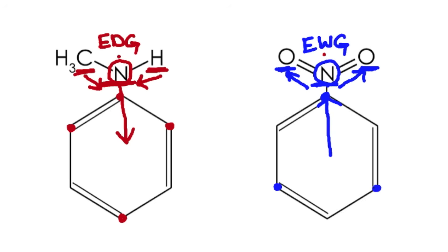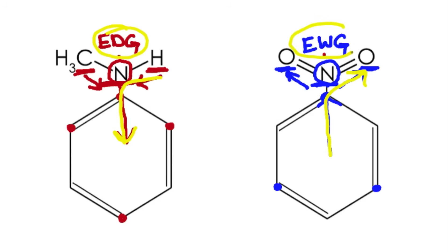So notice, based on electronegativity, if the arrows are pointing into the ring, we have electron donating groups. If the arrows are pointing out of the ring, we have electron withdrawing groups.